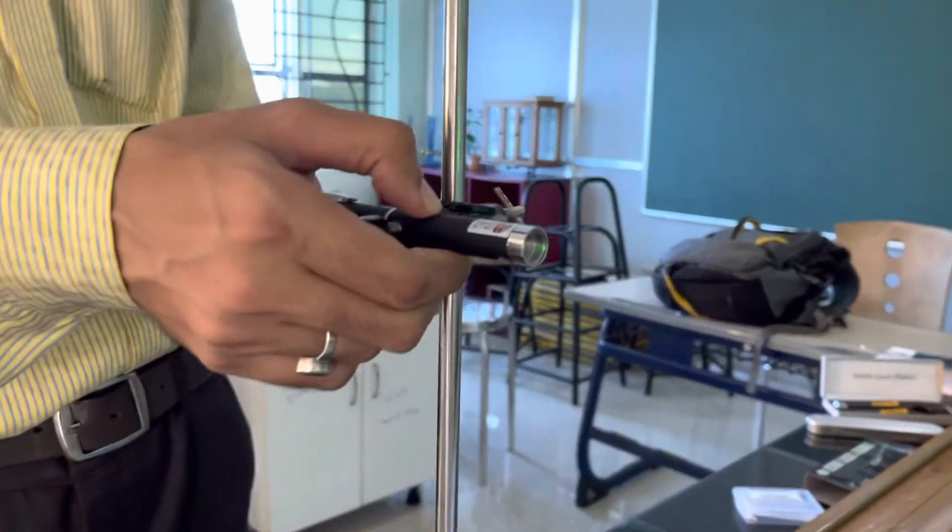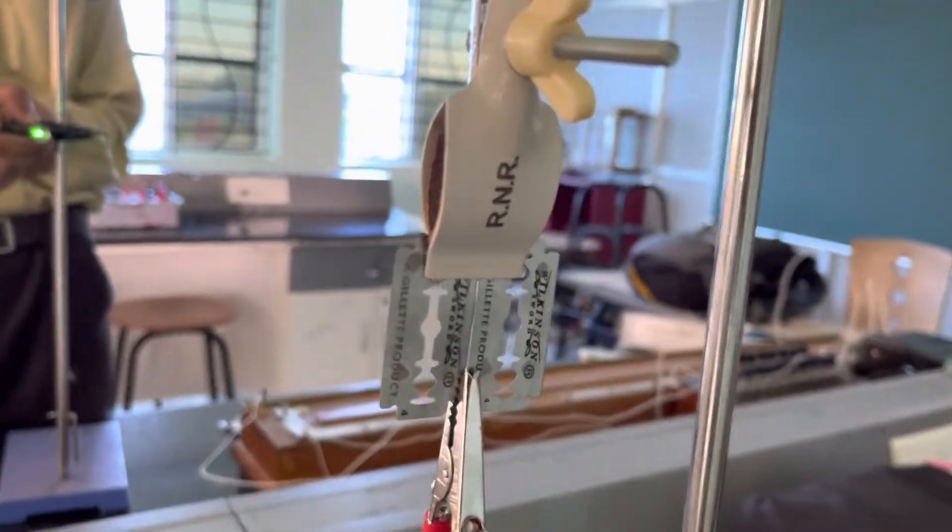This is a laser light, green laser, and these are the two blades. This is a narrow gap, narrow slit. So we'll check the diffraction pattern on the wall.